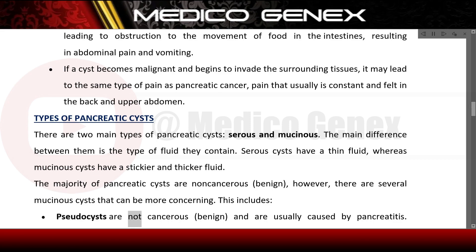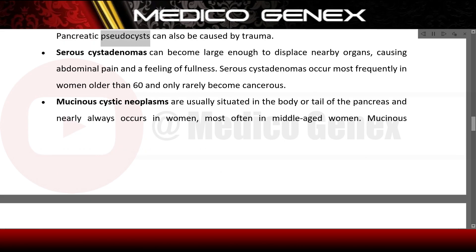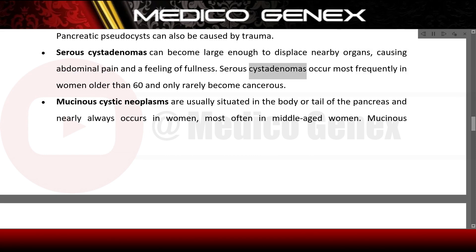Pseudocysts are benign and are usually caused by pancreatitis or trauma. Serous cystadenomas can become large enough to displace nearby organs, causing abdominal pain and a feeling of fullness. They occur most frequently in women older than 60 and only rarely become cancerous.